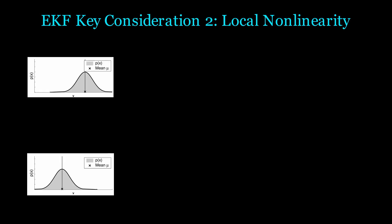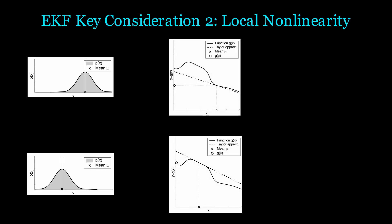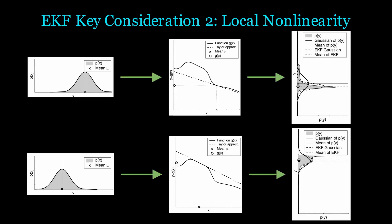The next consideration deals with the degree of nonlinearity. Here we are passing two of the same variance Gaussian distributions into the same transformation function g of x, but we are linearizing it in different locations. By inspection, the second linearization point results in a very accurate local estimation of g of x. Thus, the resulting distribution is much more aligned with the best Gaussian estimate. This is seen as the dotted and solid black lines are nearly on top of each other.